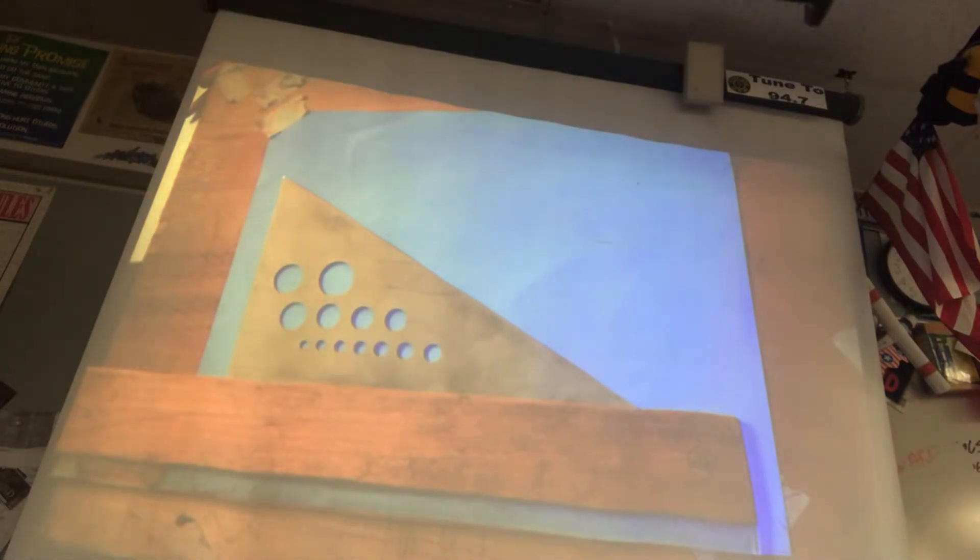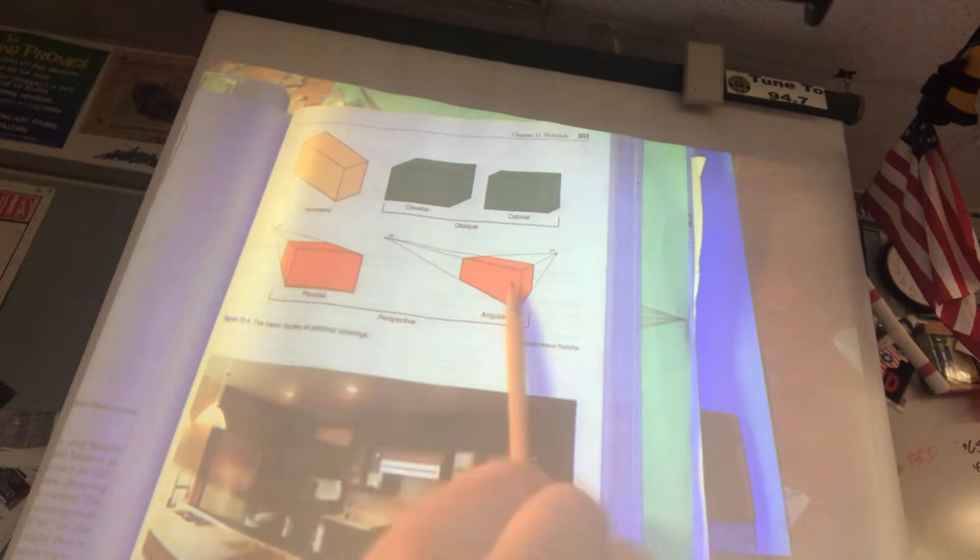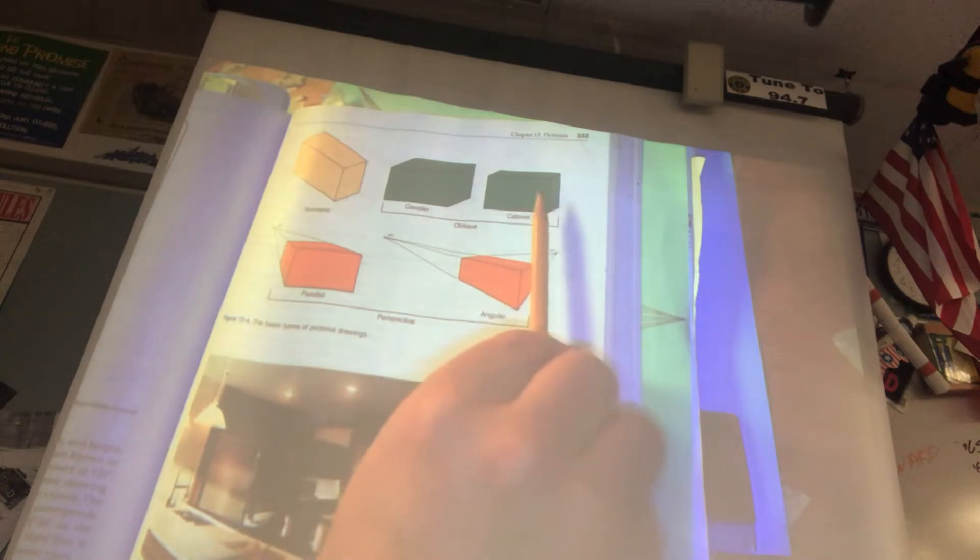So the type of drawing we're doing is an oblique drawing, and on 333, it shows you the three types of three-dimensional drawings: isometric, oblique, and perspectives. The easiest one is the oblique, because you're just drawing the front view and then adding depth to it.